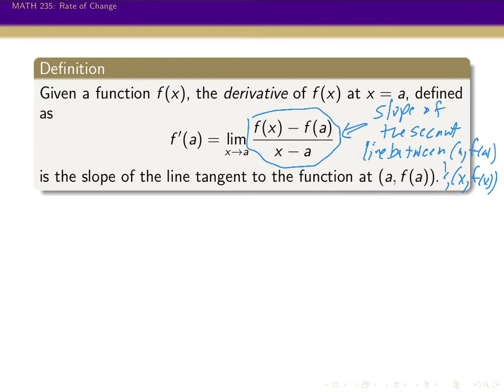So this is the geometric viewpoint. We're thinking about this function representing a curve on a graph, and doing this geometric construction of drawing lines between points on the graph, then imagining what happens as we bring those points closer and closer together to get the tangent line, to get the slope of the tangent line.